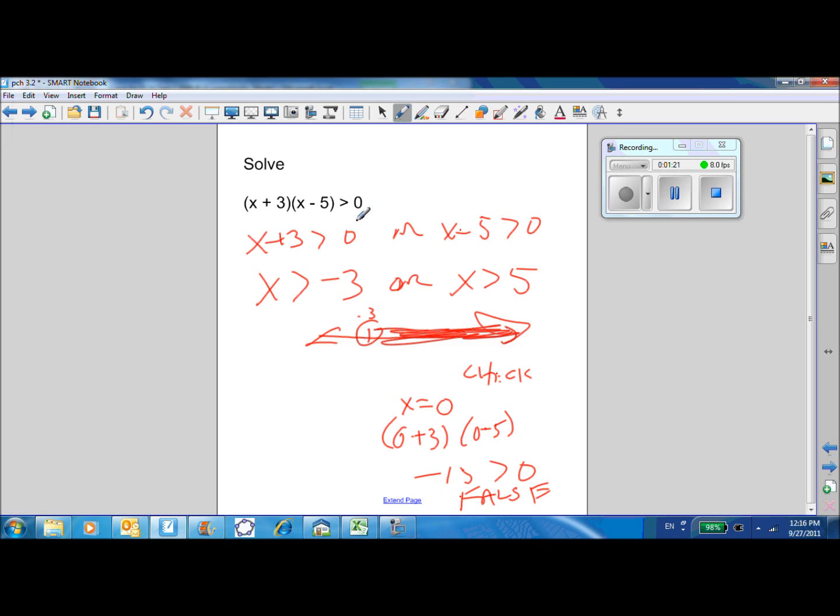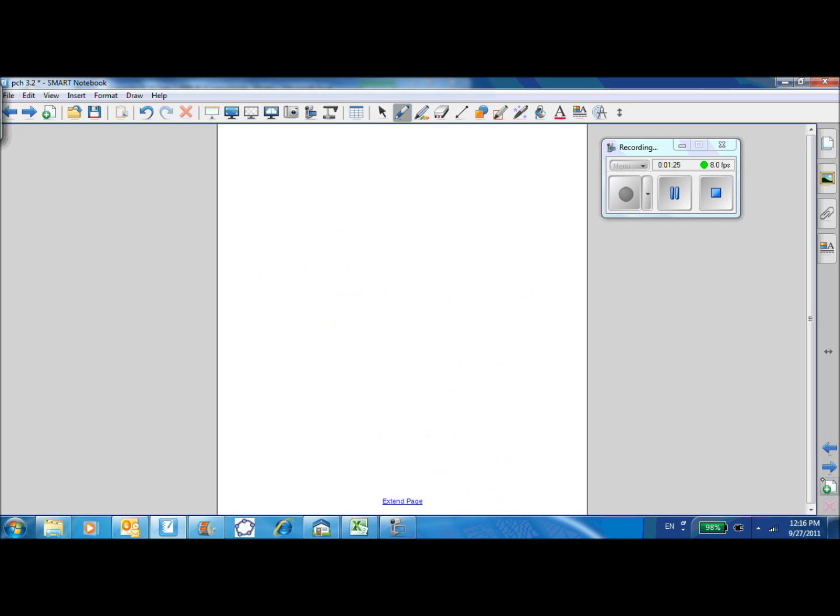If you want to make a product about inequalities, you have to do something like this. If A times B is greater than 0, then A is greater than 0 and B is greater than 0, or A is less than 0 and B is less than 0.